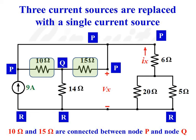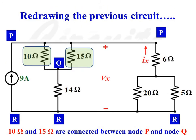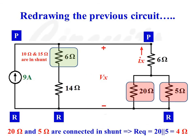The two resistors shown in the green colored box are connected in shunt. We can replace these two resistors with a single resistance of 6 ohms. 10 ohms is in shunt with 15 ohms, so the effective value equals 10 times 15 divided by 10 plus 15, which is 150 divided by 25, giving an effective value of 6 ohms.